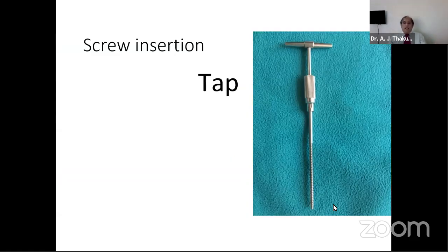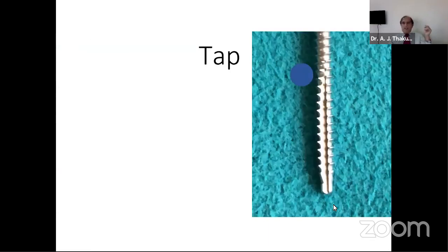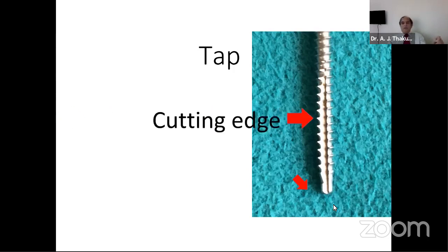After drilling we make threads using an instrument called a TAP. The long channel on the tap is for removing debris — the cutting edge is the business end. You are advised to make half a turn back, two turns forward, half a turn backward — this cuts the bone chips into smaller pieces rather than letting a long chip jam the instrument. Turning it back cuts the chips smaller so they're easily carried out, making tapping more efficient.